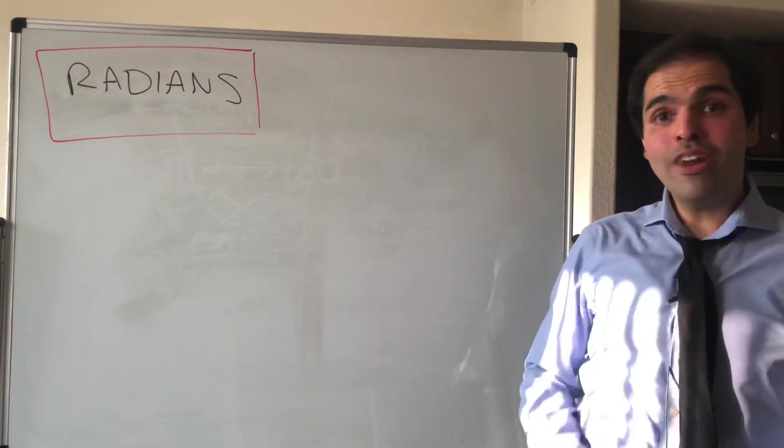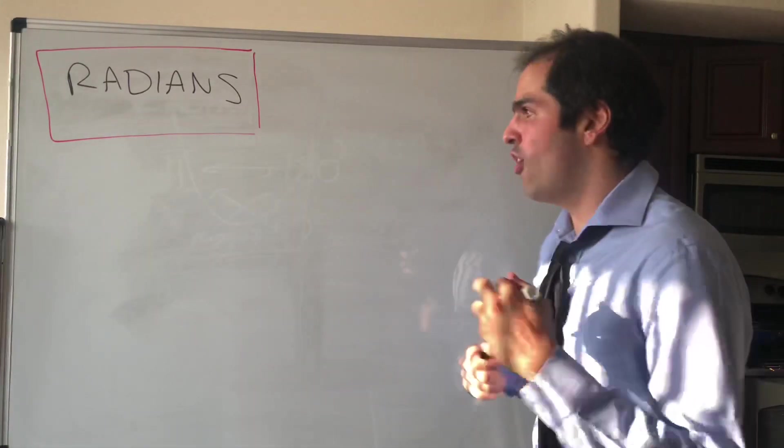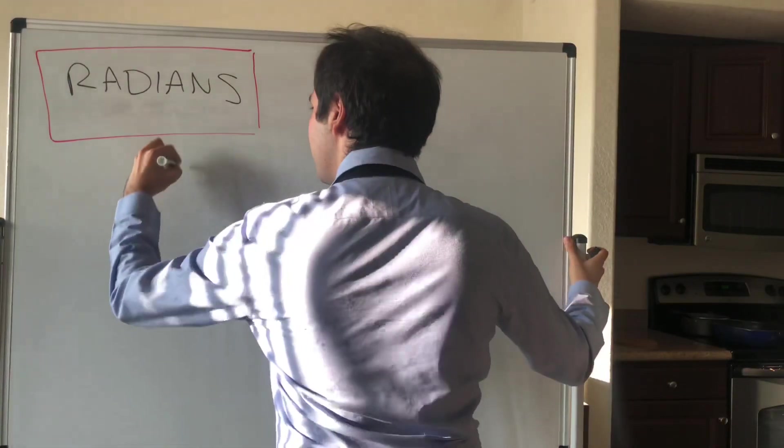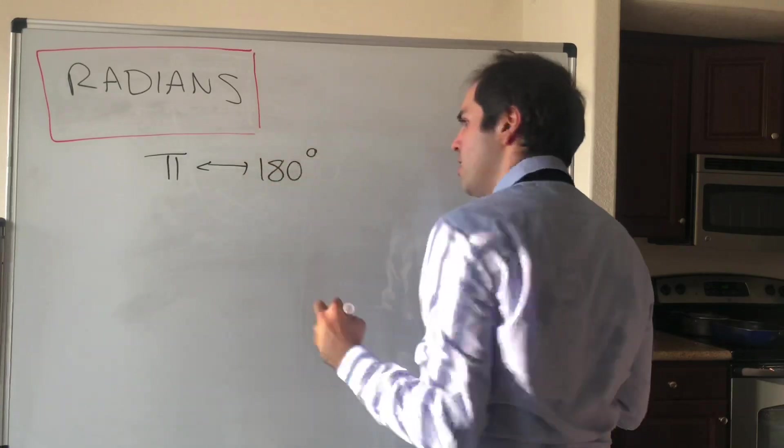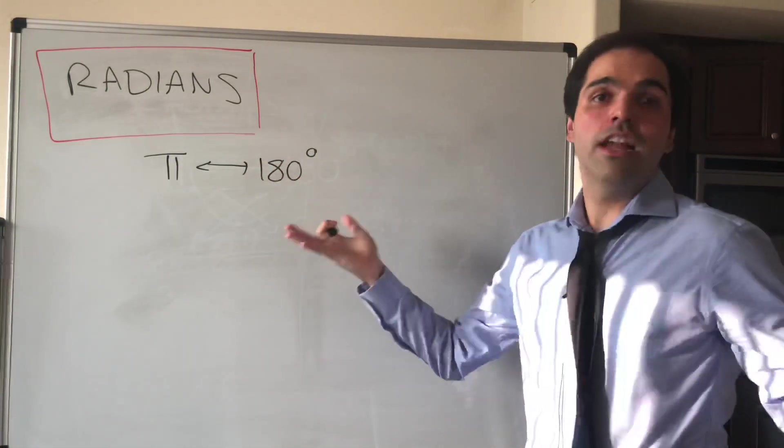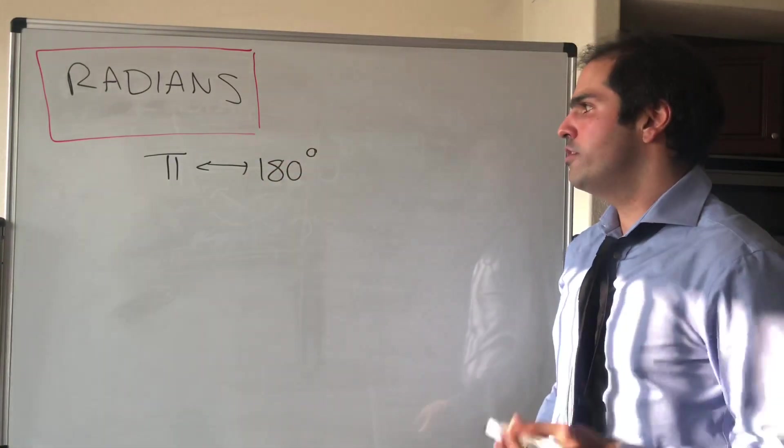Now for radians all you need to know is the following: π radians is the same as 180 degrees. And that's the thing that just allows you to go from degrees to radians.